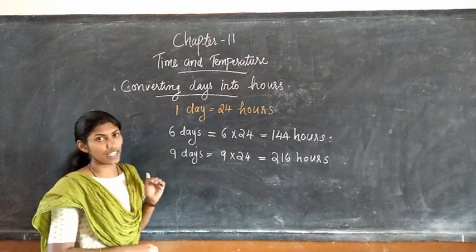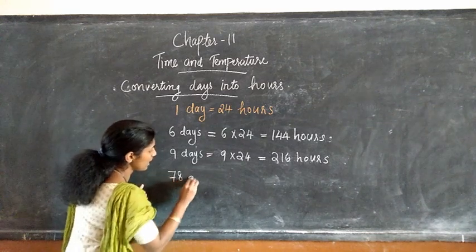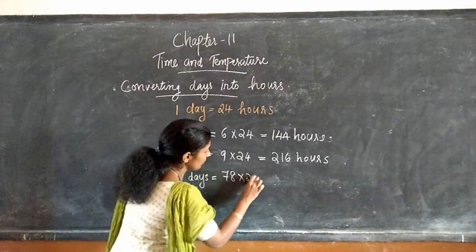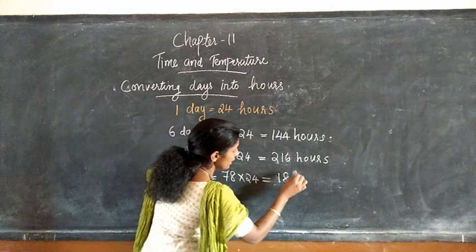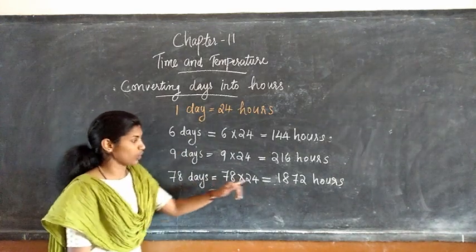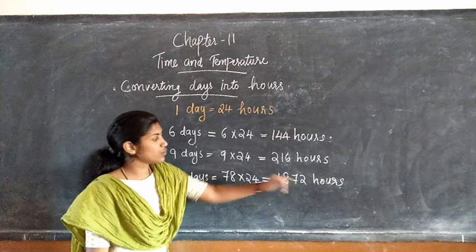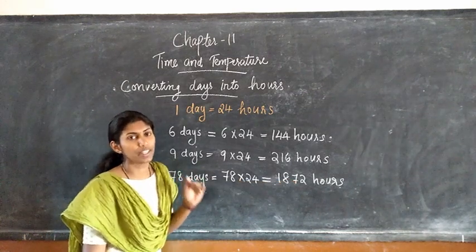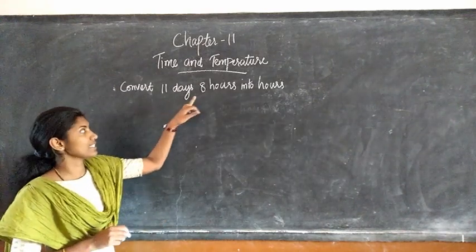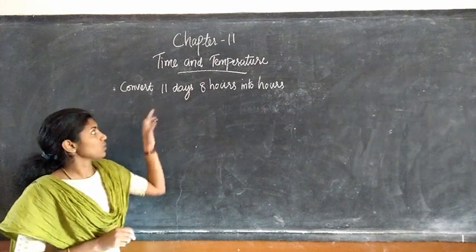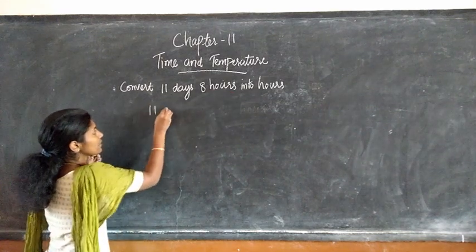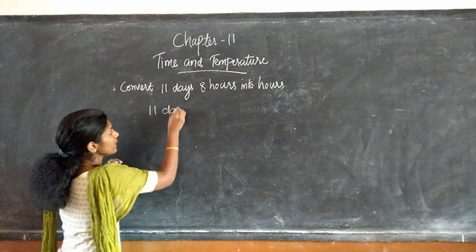Next question: we have to convert 9 days into hours. That is 9 days equal to 9 into 24, that is equal to 216 hours. So 9 days equal to 216 hours. Next question: we have to convert 78 days into hours. 78 days equal to 78 into 24, that is equal to 1872 hours. So 78 days equal to 1872 hours.